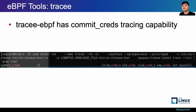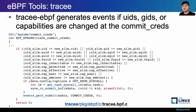Tracee eBPF observes changes in UID, GID, and capability when commit_creds is called. If the current credential differs from the new credential when commit_creds is called, an event is raised. The following figure is Tracee's eBPF code, which traces commit_creds, and you can see that an event is sent if there is a difference between the previous credential and the new credential.